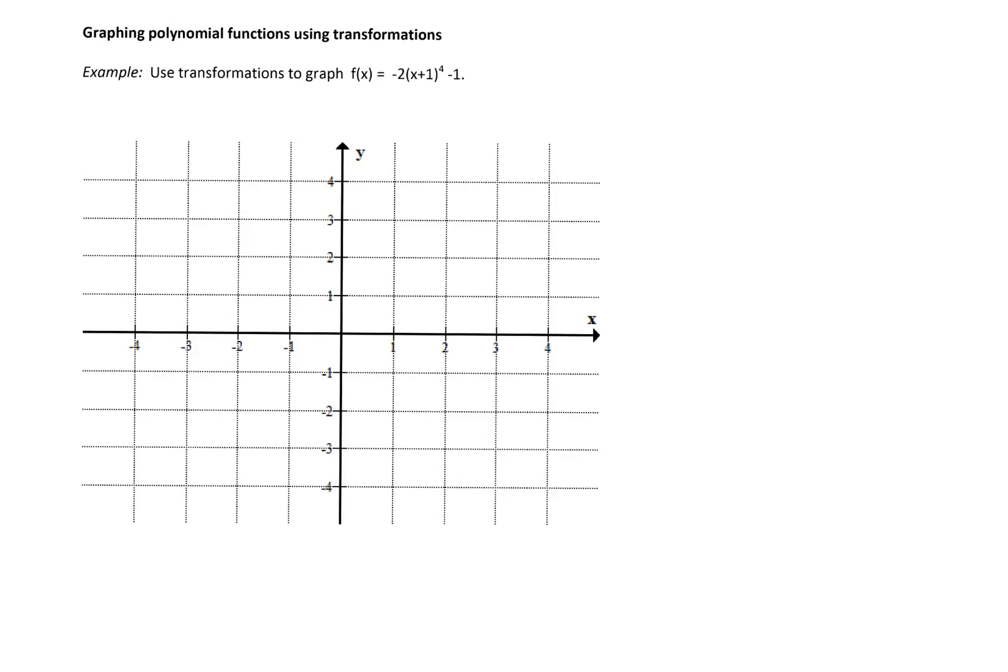Function f of x is negative 2 times x plus 1 to the power 4 minus 1. Let's list the transformations of the basic function, which in this case is the function x to the 4th. This is the basic function. Let's list transformations of that graph that result in some geometrical transformations.